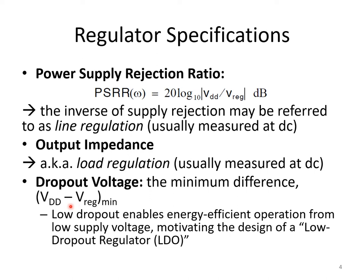In many cases, we'd like to minimize this difference. The dropout voltage is the minimum difference we can have between VDD and VREG. A low dropout voltage implies energy efficient operation. Moreover, it allows a voltage regulator to operate even under a relatively low supply voltage and still provide a reasonable VREG for analog circuits to operate under. This gives rise to the common name low dropout regulator, which is a particular type of voltage regulator often required on analog or mixed-signal integrated circuits with low supply voltage. We often just call these LDOs.